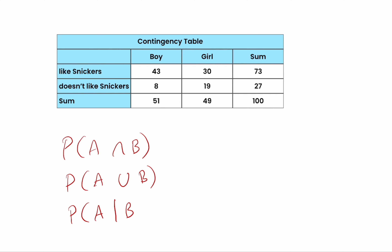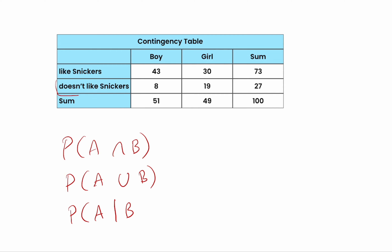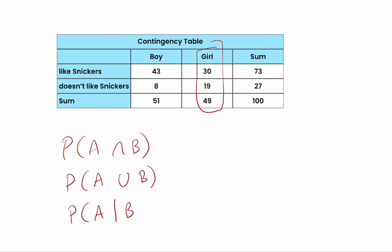To read this table: the value 43 means there are 43 people in our sample who are boys and like Snickers. There are 30 people who are girls who like Snickers, and the row total of 73 means 73 people in total like Snickers. Similarly, there are 27 who don't like Snickers — 19 are girls and 8 are boys. The column totals show 49 total girls: 30 like Snickers and 19 don't. The same logic applies to the boys column.